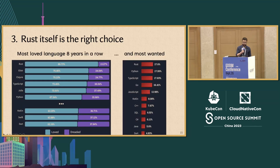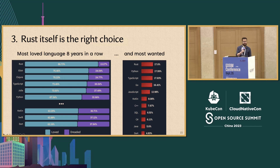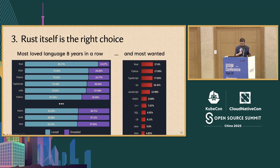Our third motivating factor is we believe Rust is the right choice. It's been the most loved language according to Stack Overflow developer surveys for eight years in a row. This year is the first time it became the most wanted — so it's not just a past success thing. The love for Rust is growing. I still think the time is right to delve into the Rust app dev world and make things even better.